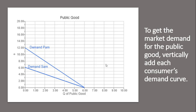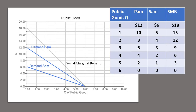To get the market demand or the social marginal benefit curve, we're going to vertically add each consumer's demand curve. This black line is the market demand for the public good, or the social marginal benefit curve — just adding up the demand or marginal benefit for each consumer of the public good.